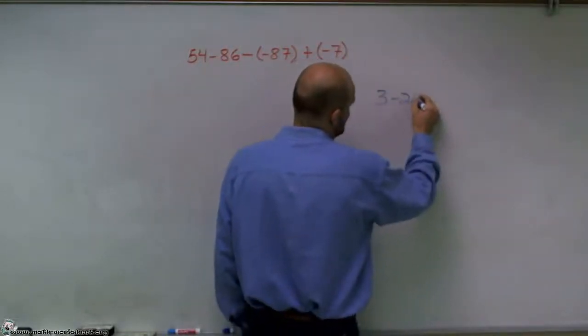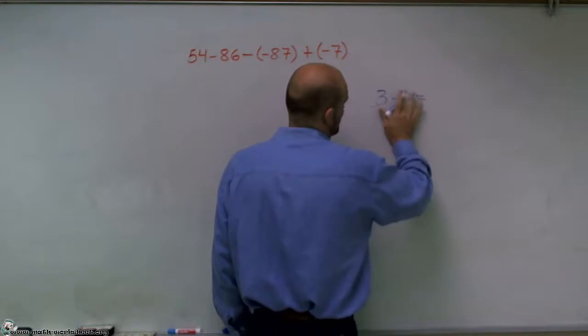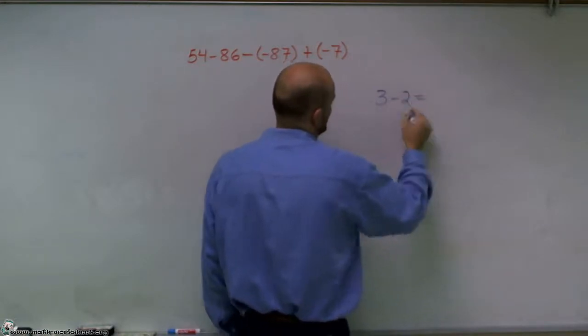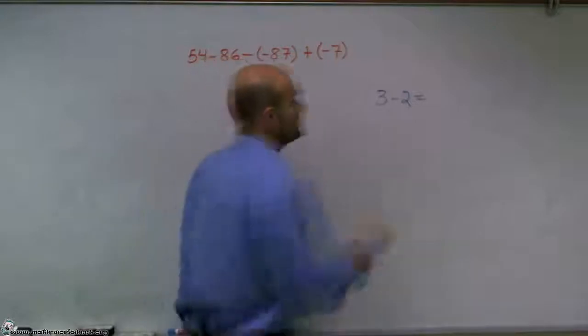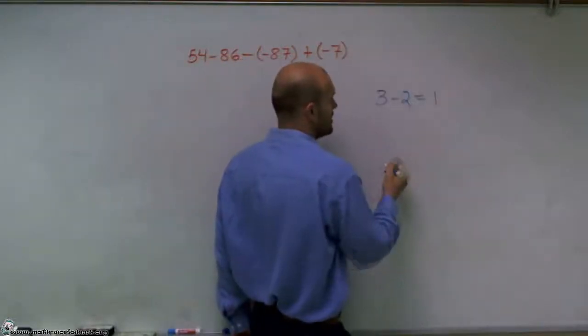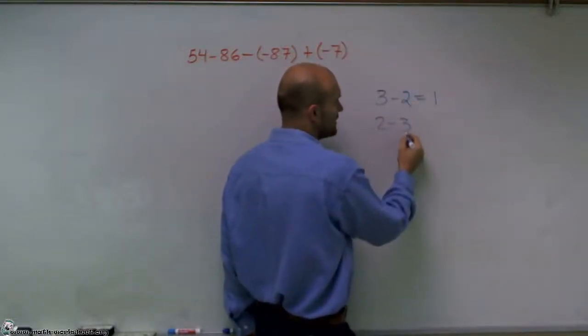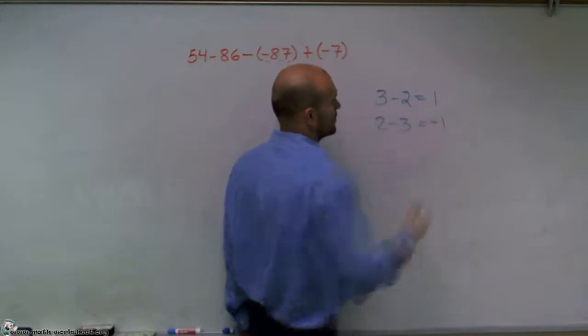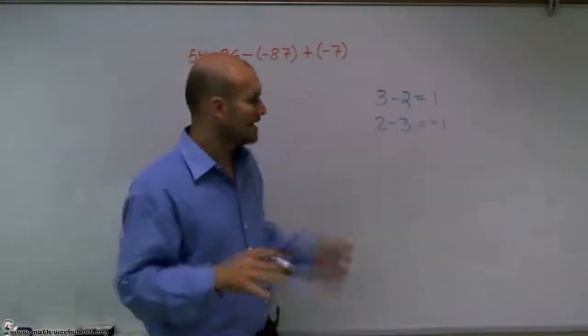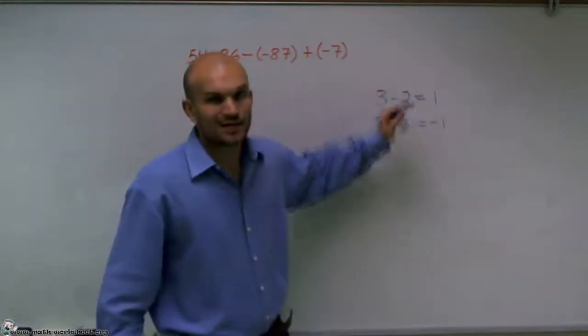3 minus 2, let's pick a different one. Yeah, that's fine. 3 minus 2 is equal to 1. However, if you did 2 minus 3, well, that's equal to negative 1. So we've got to be very careful. Those answers are not the same.